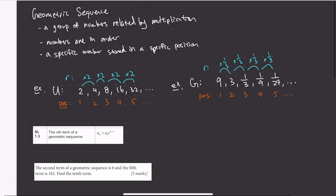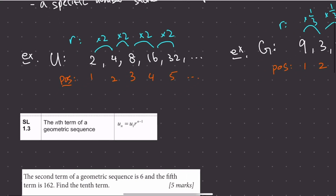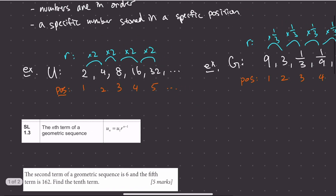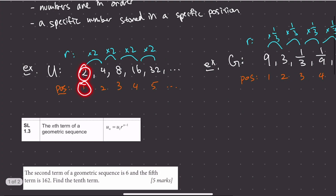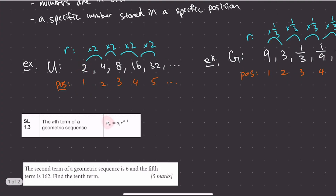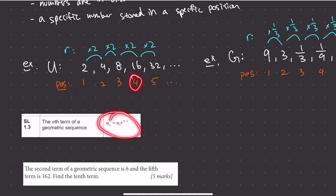For geometric sequences, the questions they can ask are: given a specific position, what is the value stored? The formula is: the value in position n equals the value in position 1 times r to the power of n minus 1. They might ask: given position 1, what is the value in position 2? Or given a value of 16, what is its position? You'd use this formula in both cases.